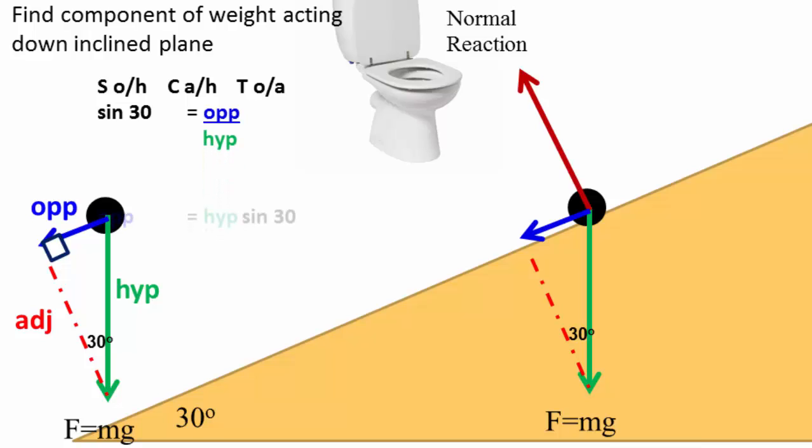So we have the opposite and the hypotenuse, so it's the sine. Let's rearrange first. The opposite is equal to hypotenuse times sine 30. The hypotenuse is the weight mg, which is equal to mg sine theta. So the component of the weight acting down the slope is equal to mg sine theta.